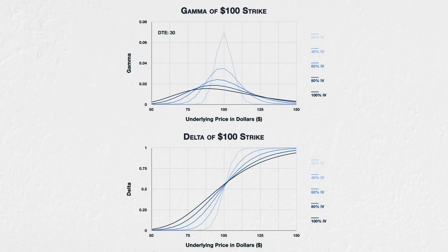Now let's go to the other end of the scale and look at the 100% IV line. With 100% IV, we can see the delta line is at its steepest when the underlying price is at about $88. This corresponds with the peak on the gamma chart for 100% IV being at about $88. We can also see that the delta takes much longer to reach the extremes of 0 and 1. In fact, even with the underlying price at $150, the delta of the $100 call is still well below 1. We can see this reflected on the gamma chart by the gamma line being lower and wider.